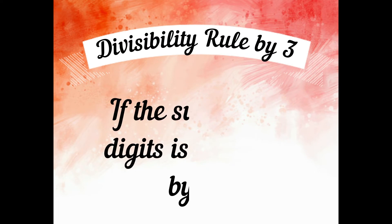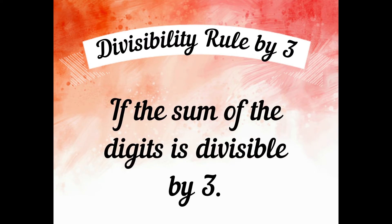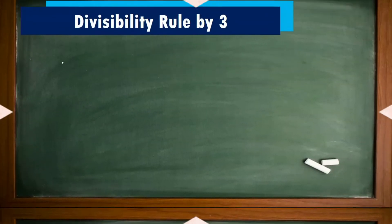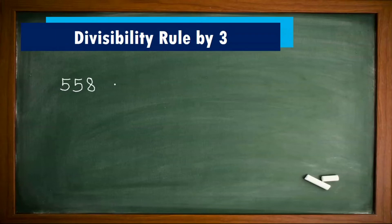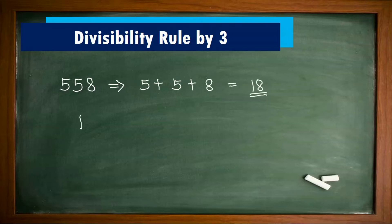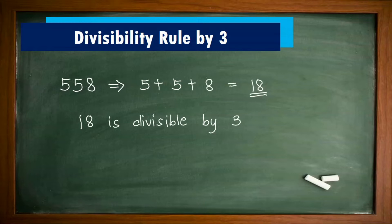Divisibility rule by 3: A number is divisible by 3 if the sum of the digits is divisible by 3. For 558, if we add the digits: 5 plus 5 plus 8 equals 18. The sum is divisible by 3, and 18 is divisible by 3 because 3 is a factor of 18 — that is, 6 times 3 equals 18.